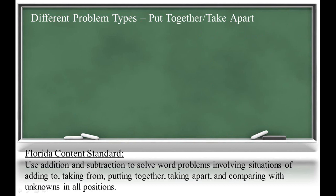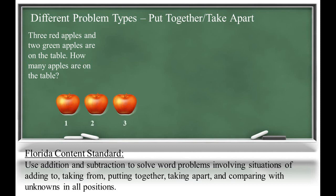Now let's look at put together, take apart problems. These problems are different because there is no action, such as apples being eaten or bunnies hopping to join a group. Three red apples and two green apples are on the table. How many apples are on the table? There are three red apples and two green apples, so three plus two equals five.